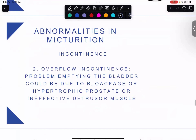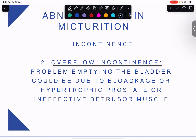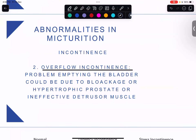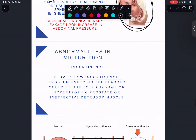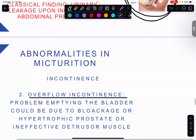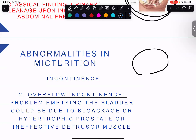The third type is overflow incontinence — not a problem with the sphincter or detrusor muscle directly, but a problem with emptying the bladder. It could be due to a blockage such as a hypertrophic prostate, or an underactive detrusor muscle — think of it like a piping bag.